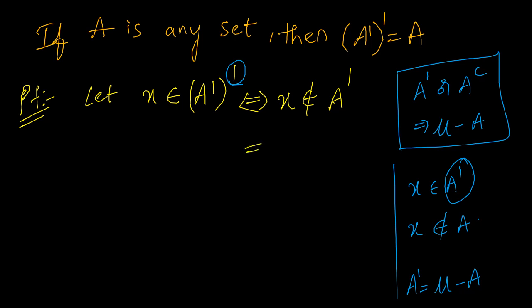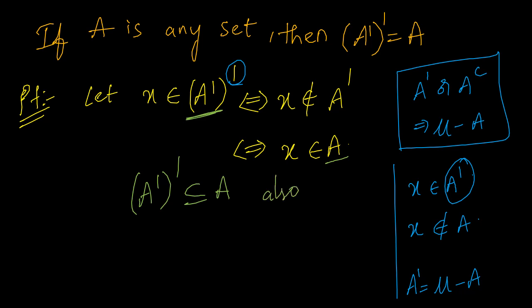If X is not there in A complement, obviously it will be in set A. So X belongs to set A. This is a known fact. From this, we can say the X element is in this set and the same X element is in the other set. From this I can say A complement whole complement is a subset of A. Also, using the if-and-only-if statement backwards, A is a subset of A complement whole complement. With the help of equality of sets, I can prove that A complement whole complement equals set A.